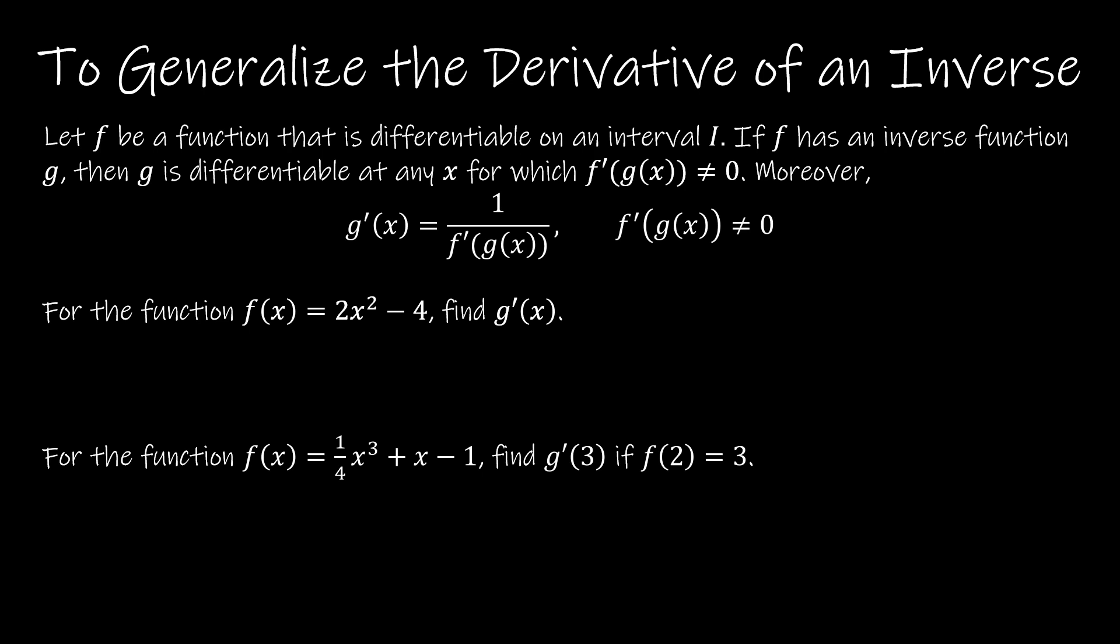So that's all this theorem is saying, is that if f is differentiable and has an inverse function of g, then g is also differentiable, and that g prime of x is equal to 1 divided by f prime of g(x). So it might not seem super helpful. For instance, we're going to work through this first example, and we're going to do it exactly like the last example, but you'll see how helpful it is when we get to that second question.